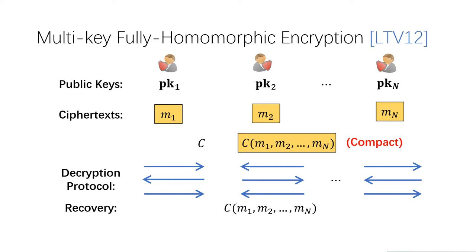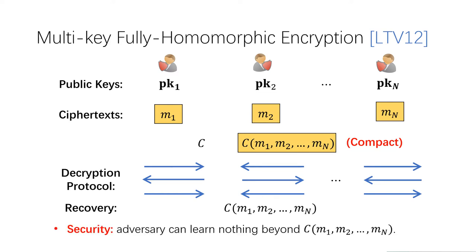For the properties, we require this scheme to satisfy compactness, which means the homomorphically evaluated ciphertext has a size independent of the circuit being evaluated. But we allow the size of the new ciphertext to depend on the depth of the circuit being evaluated. For the security, we require that any adversary can only learn the output of the circuit and nothing else.